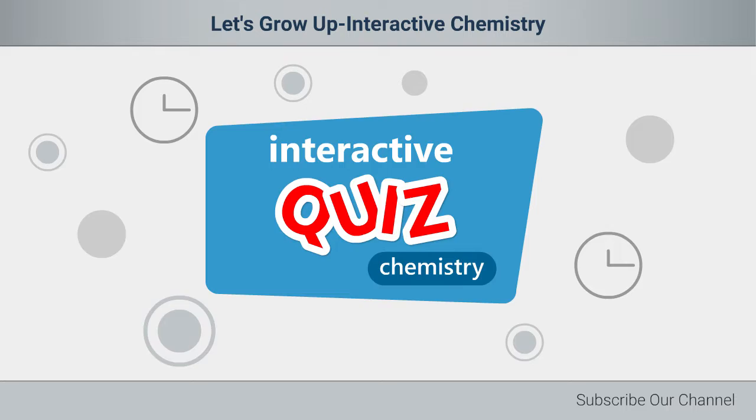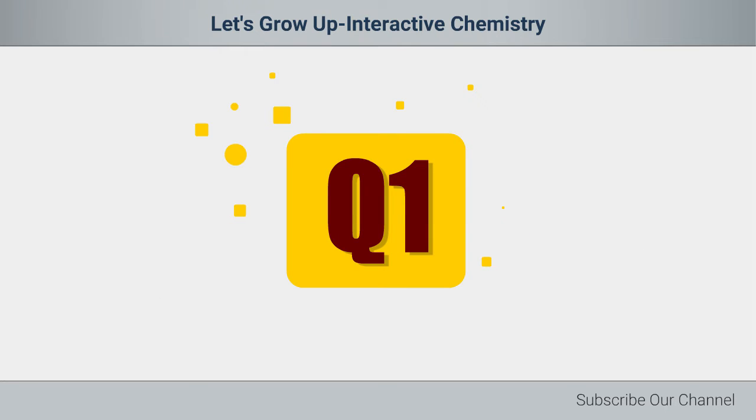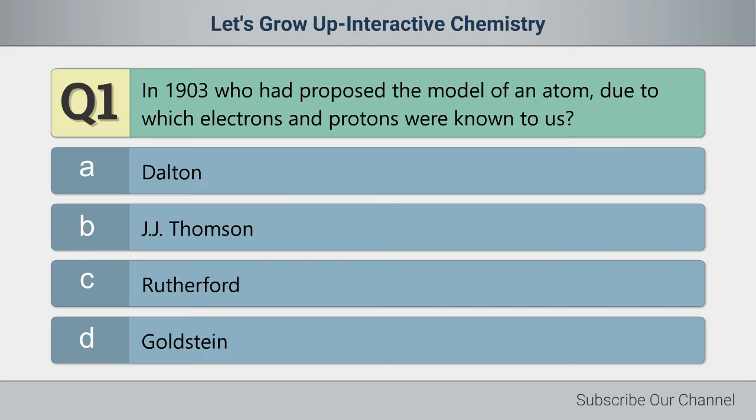Interactive for Chemistry. The first question is for you. In 1903, who had proposed the model of an atom, due to which electrons and protons were known to us?